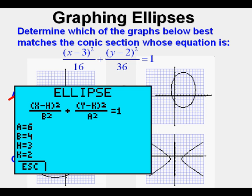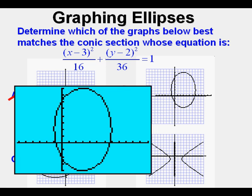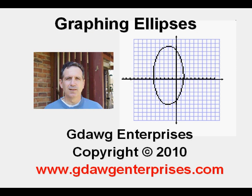We can also go to the conic application, put in 6 for a for square root of 36 and the 4 for b for square root of 16. Now we can graph by going to zoom and press enter for zoom conic. We see that it does in fact match answer B which we figured earlier.